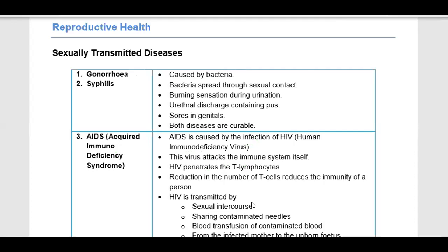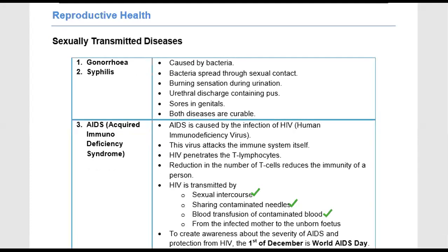HIV is transmitted by sexual intercourse, but that is not the only route. It can also be transmitted through contaminated needles — if an AIDS-infected person's needle is used by a healthy person, that person can also get AIDS. Another route is blood transfusion — if infected blood is donated to someone, they can also become infected. To create awareness about the severity of AIDS and protection from HIV, the 1st of December is observed as World AIDS Day, when awareness is provided to people about what AIDS is and how to protect themselves.